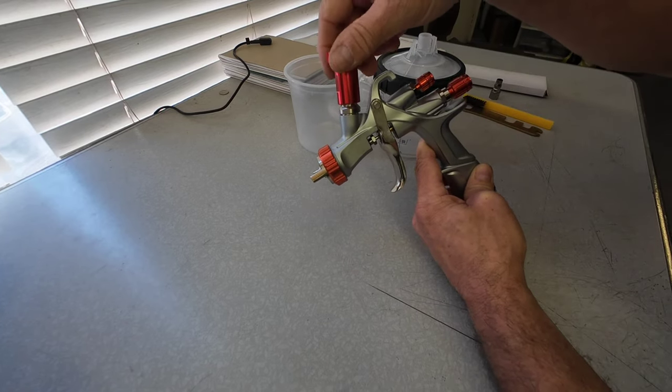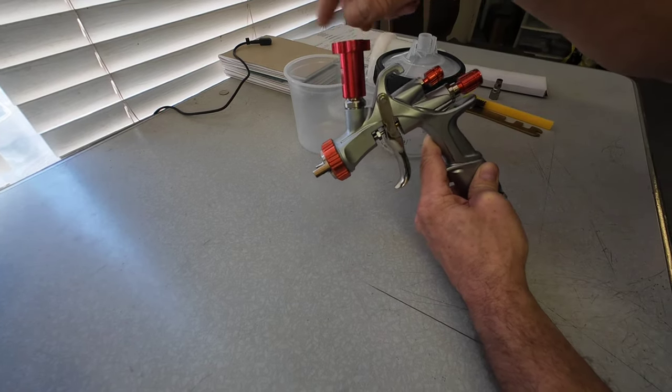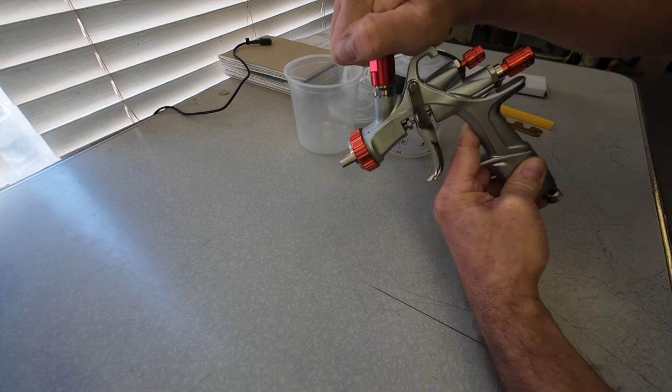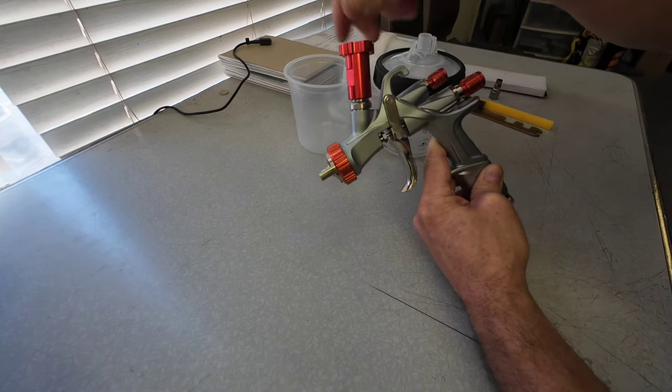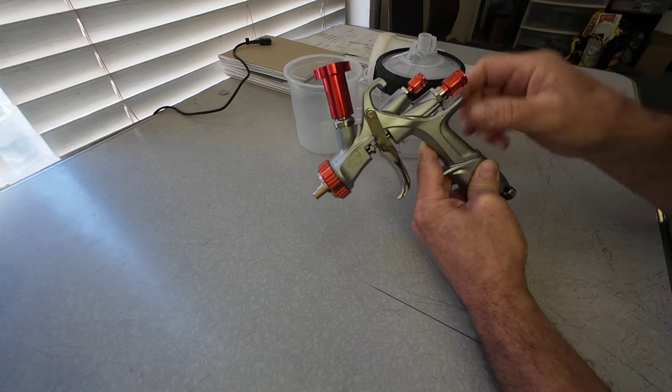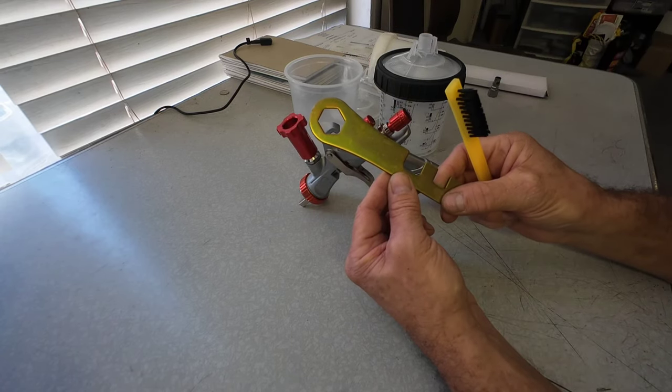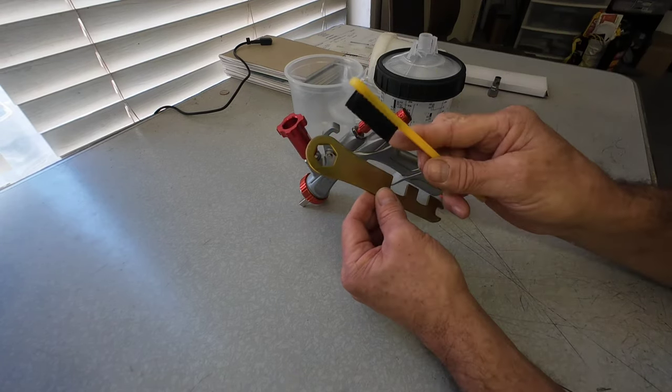So with this kit, you also get the PPS adapter. This is a series one PPS adapter, and sometimes these are a little hard to find. So it's nice that it comes included in this kit. You also get a small tool kit with a spanner wrench and a cleaning brush.